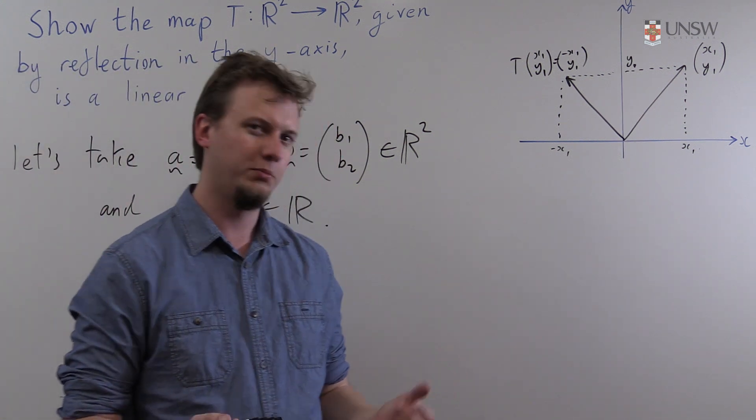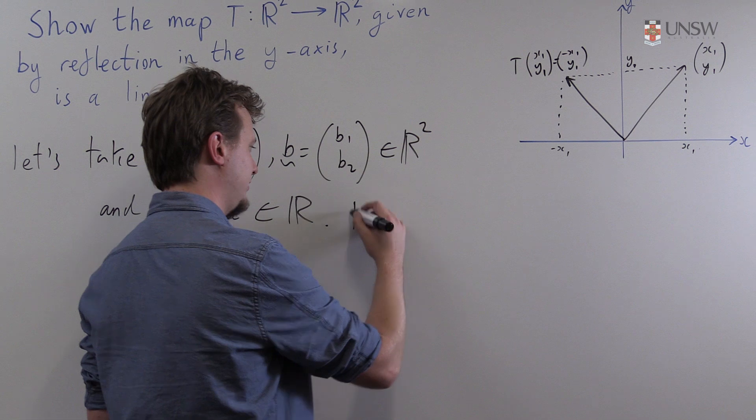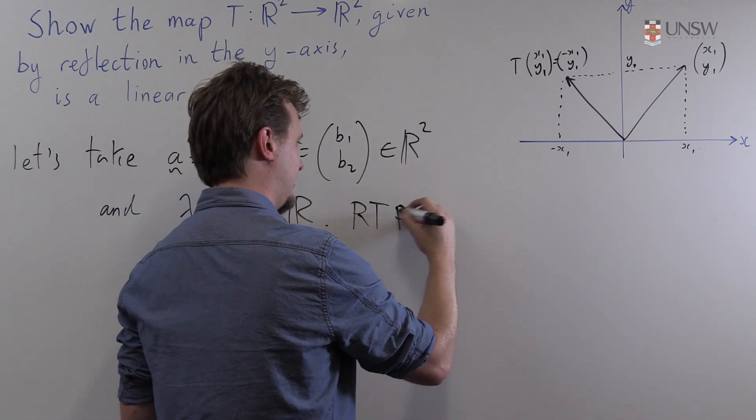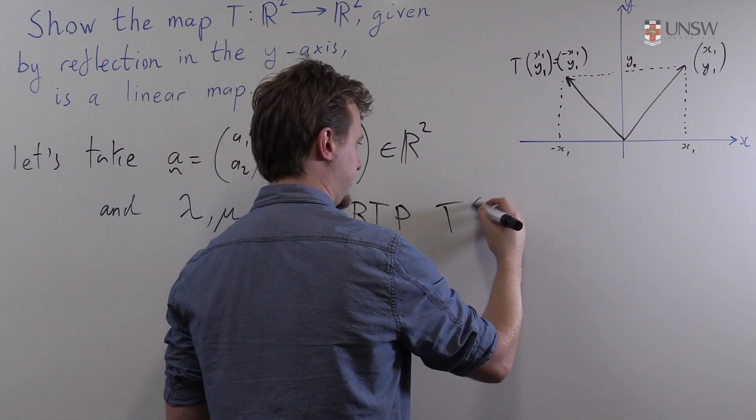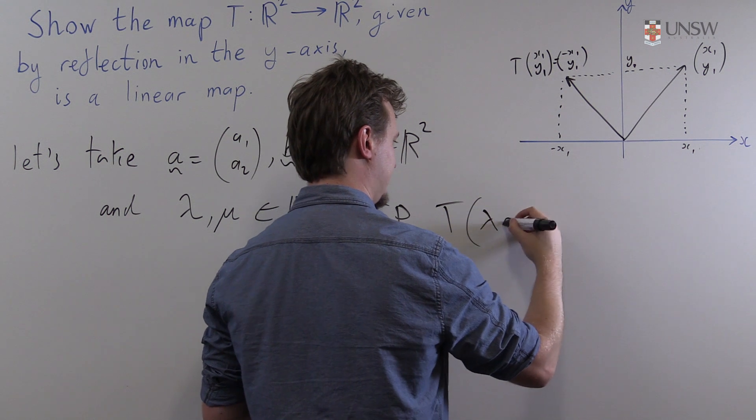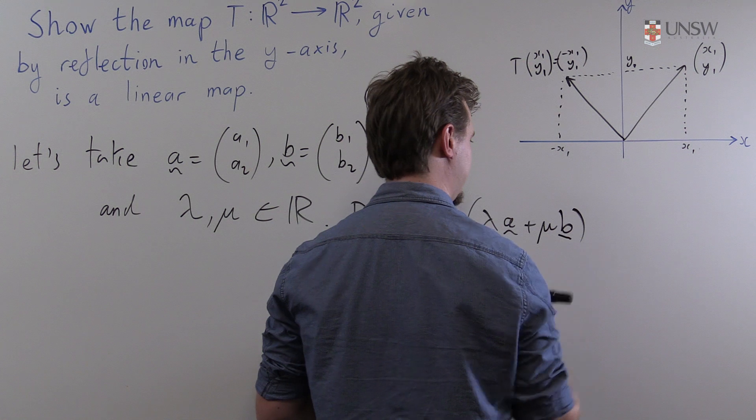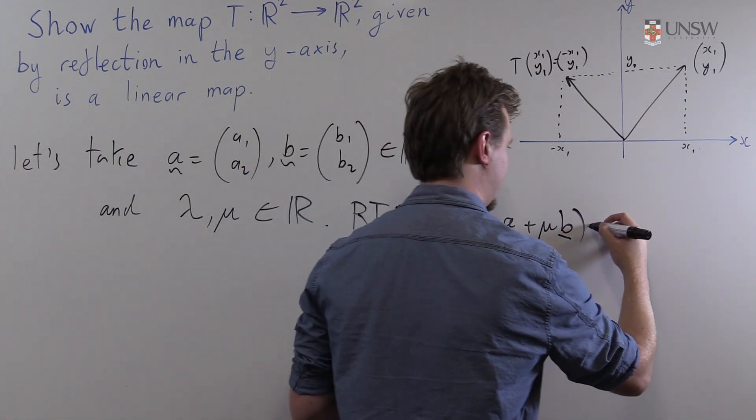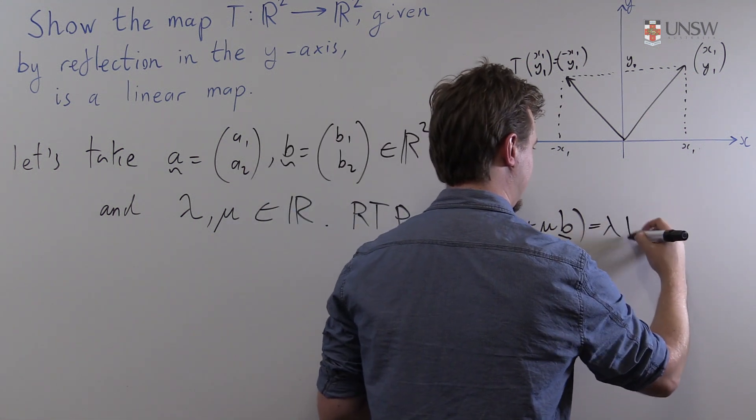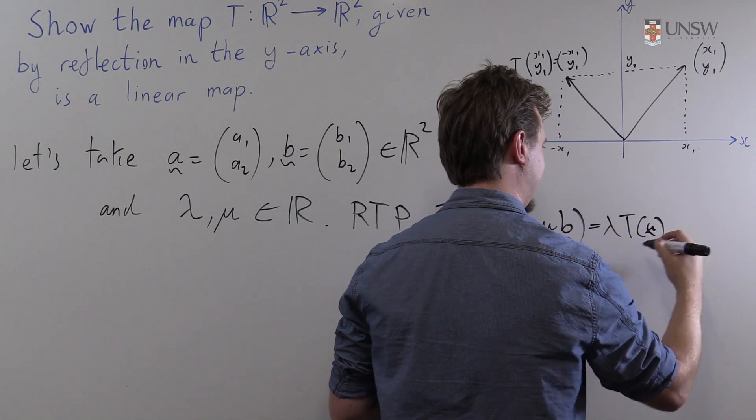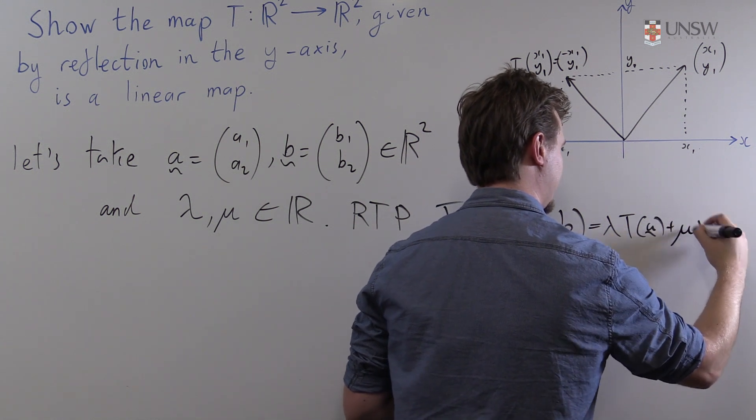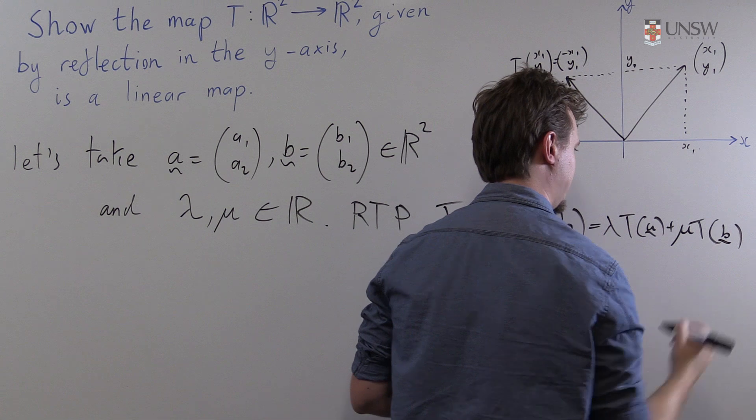So what is it we're required to prove? Well we're required to prove that if you take the map and apply it to λa + μb, that will be the same as if you take λ times the map applied to a plus μ times the map applied to b.